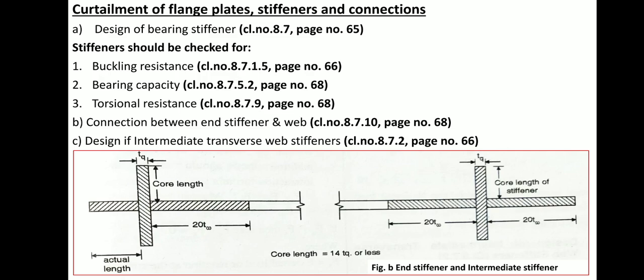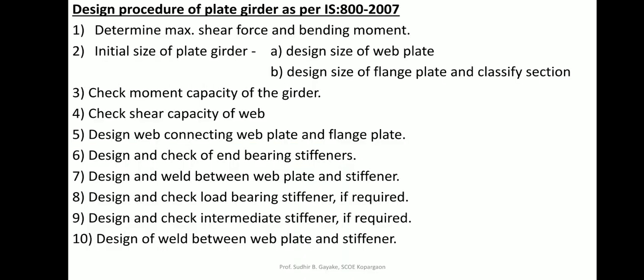With stiffener dimensions known, you can calculate moment of inertia, area, buckling stress, compression stress, and buckling resistance or bearing capacity. Connection design includes: flange-to-web connections and stiffener-to-web and stiffener-to-flange connections, all using welded connections. This concludes the short introduction to plate girder components and load transfer. The next video will start with Condition 1 where d/tw ≤ 67ε and the girder is designed as a regular beam section. Thank you.